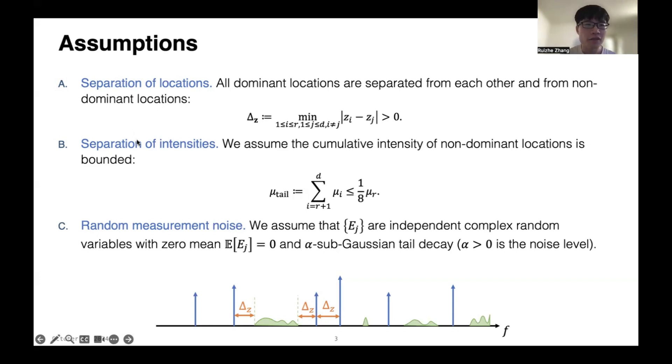Second, we assume that the total intensity of the bias part is much smaller than the minimum intensity in the signal part. In other words, the signal-to-noise ratio, or SNR, cannot be too small. Third, we assume that the measurement noise e_j are independent random sub-Gaussians with mean 0 and parameter α, where α characterizes the noise level of the signal.